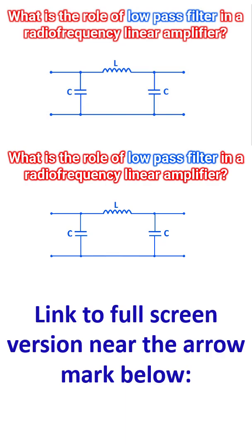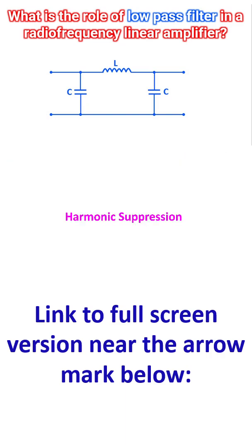Even though an amplifier is called linear, no physical device is perfectly linear. The process of amplification inevitably generates distortion products, specifically harmonics. The most critical role of a low pass filter is to remove harmonics.